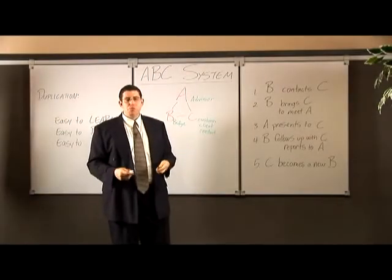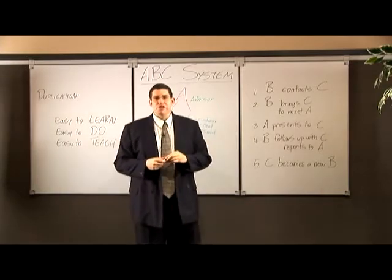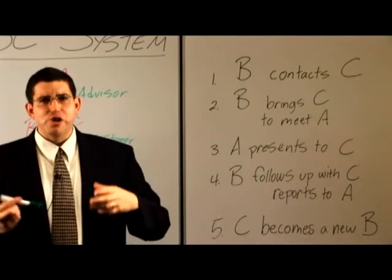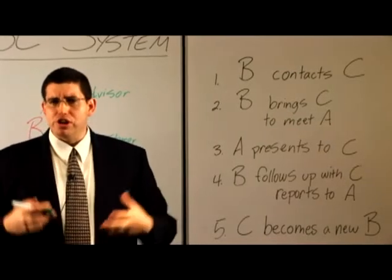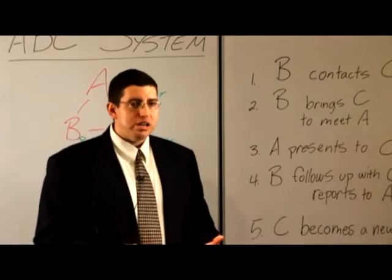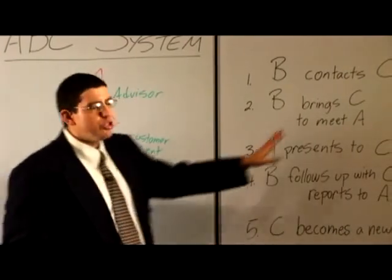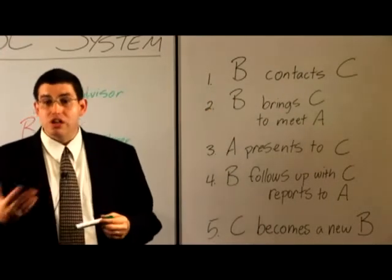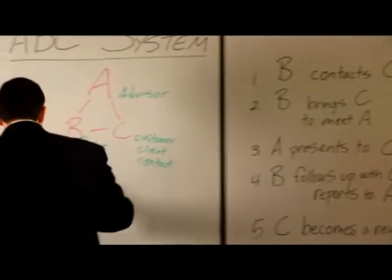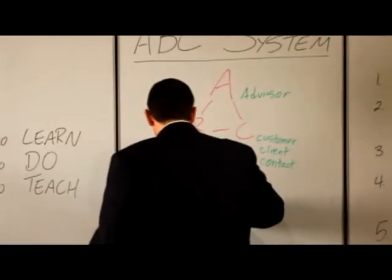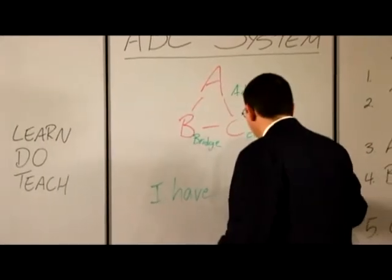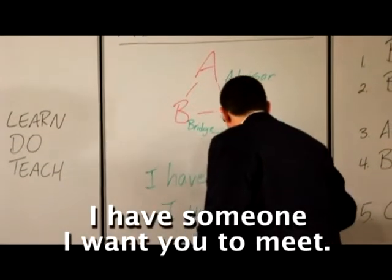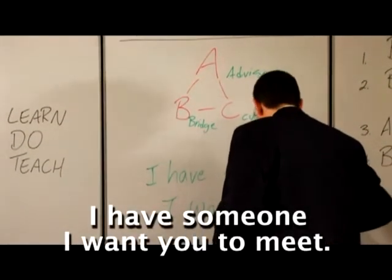B, contact C. Where do you get your C's from? We encourage you in the training manual and on this DVD, we've told you about making a list, about sitting down and writing down the names of people that you want to work with or people that you think would be interested in this, people that you want to share these products and this opportunity with. Those are your C's. So how do you do it? You first contact them. You tell them that you have something that you want to talk with them about. Or more than that, I often say, I have someone, I have someone I want you to meet.